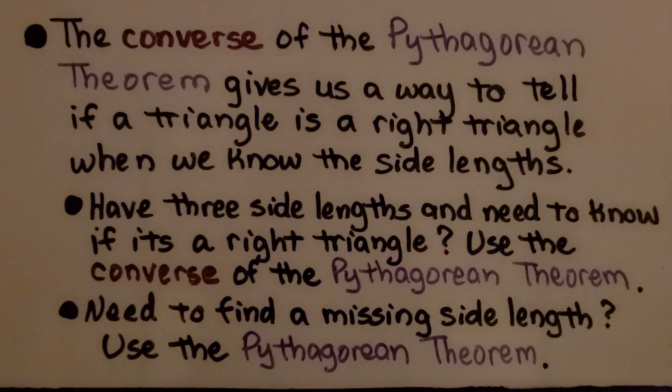If we have three side lengths and need to know if it's a right triangle, we use the converse of the Pythagorean theorem. Need to find a missing side length, use the Pythagorean theorem.